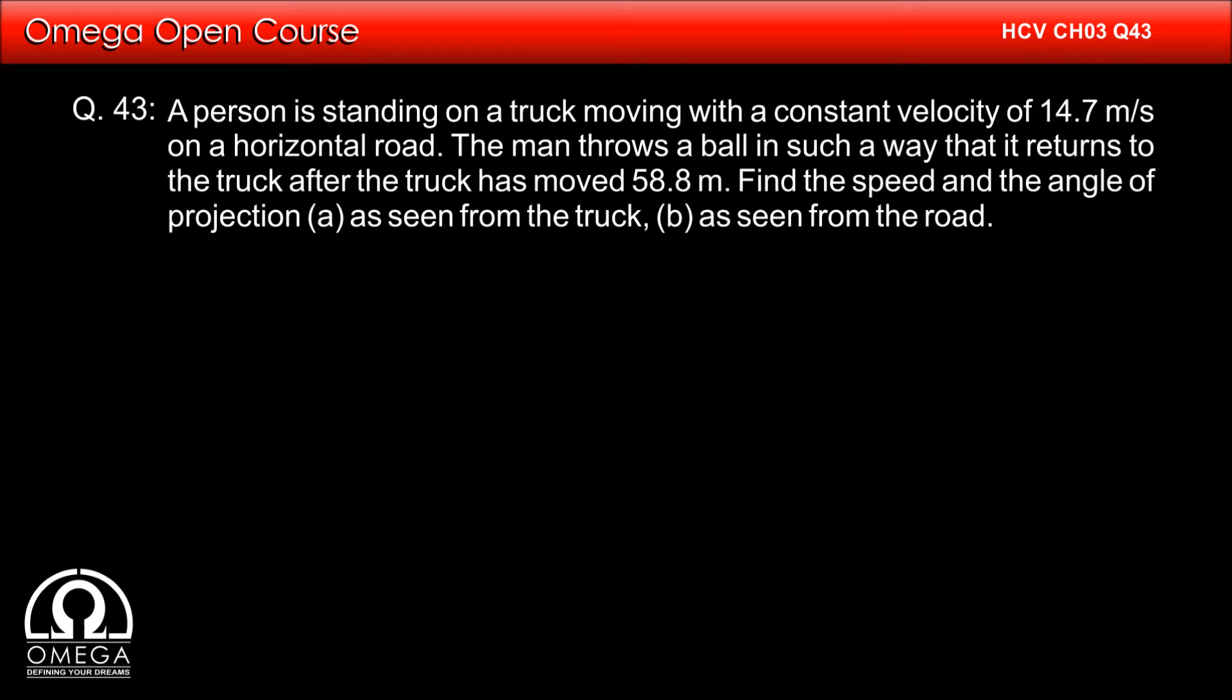A person is standing on a truck moving with a constant velocity of 14.7 m per second on a horizontal road. The man throws a ball in such a way that it returns to the truck after the truck has moved 58.8 meters. Find the speed and angle of projection A as seen from the truck, B as seen from the road.